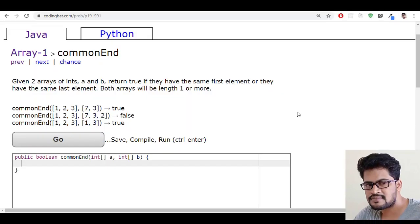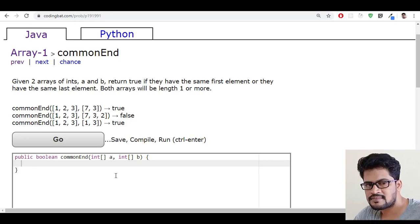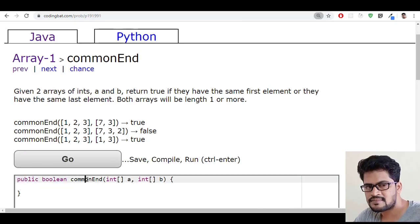Hello everyone, welcome to UI Brains. This is Naveen. In this video we're going to see a new question called commonEnd. They've given a method which has two parameters: integer array a and integer array b.